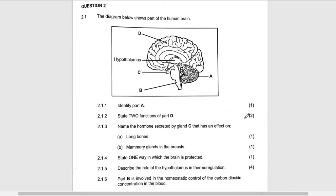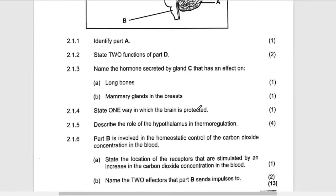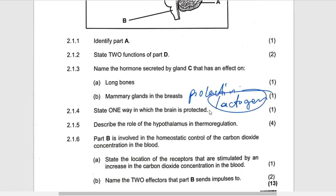Those are all the functions of cerebrum. The hormone stimulated by gland C that has an effect on long bones — that is growth hormone. Growth hormone has the effect on long bones; it brings about the growth of these bones. And for mammary glands, that is prolactin.